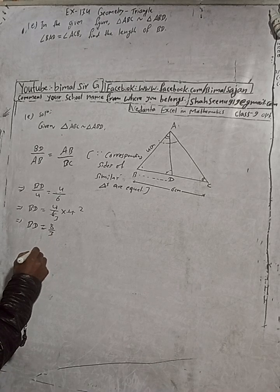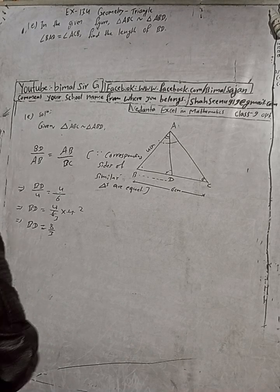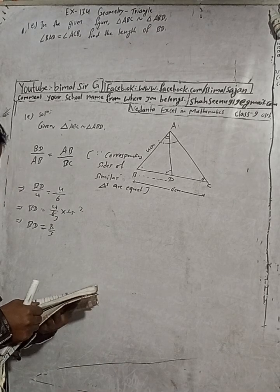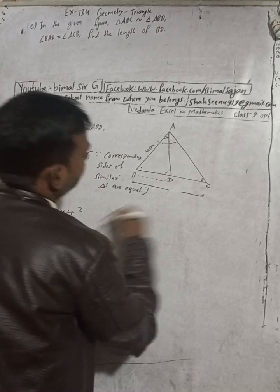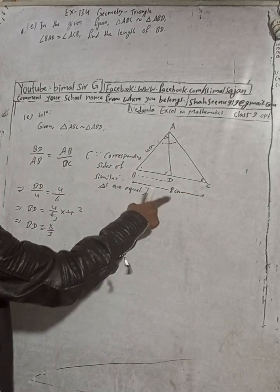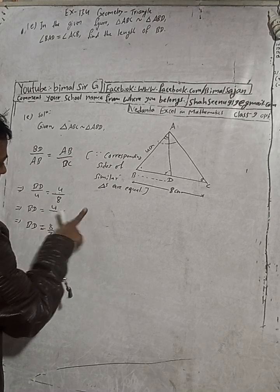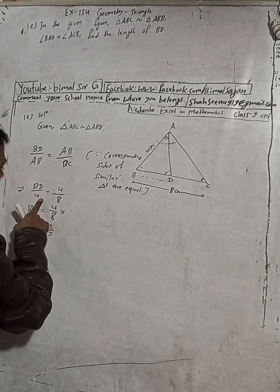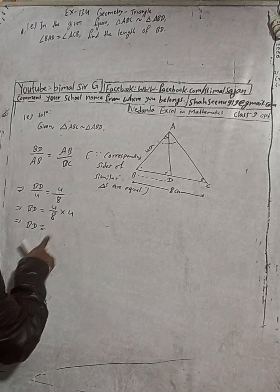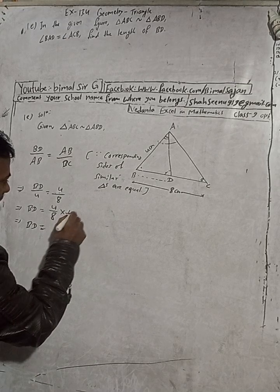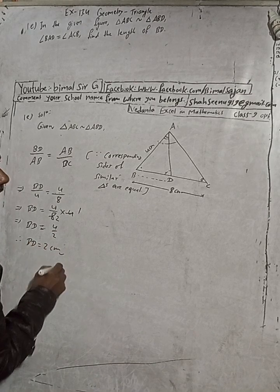The answer given is 2 — let me confirm the question. Oh, BC is actually 8 cm, not 6 cm. That's why the answer didn't match. So BC is 8 cm. Correcting: BD over 4 equals 4 over 8. Cross-multiplying: 4 divided by 2 equals 2. Therefore BD is equal to 2 cm. The answer is confirmed as 2 cm.